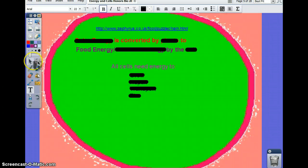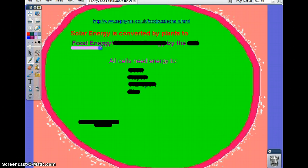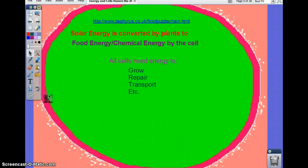So a little quick recap. You start with solar energy, and plants convert this solar energy into what we reference as food energy. But food energy is actually chemical energy, and that chemical energy is going to be used by the cell. And the cell uses energy for basically all its functions.